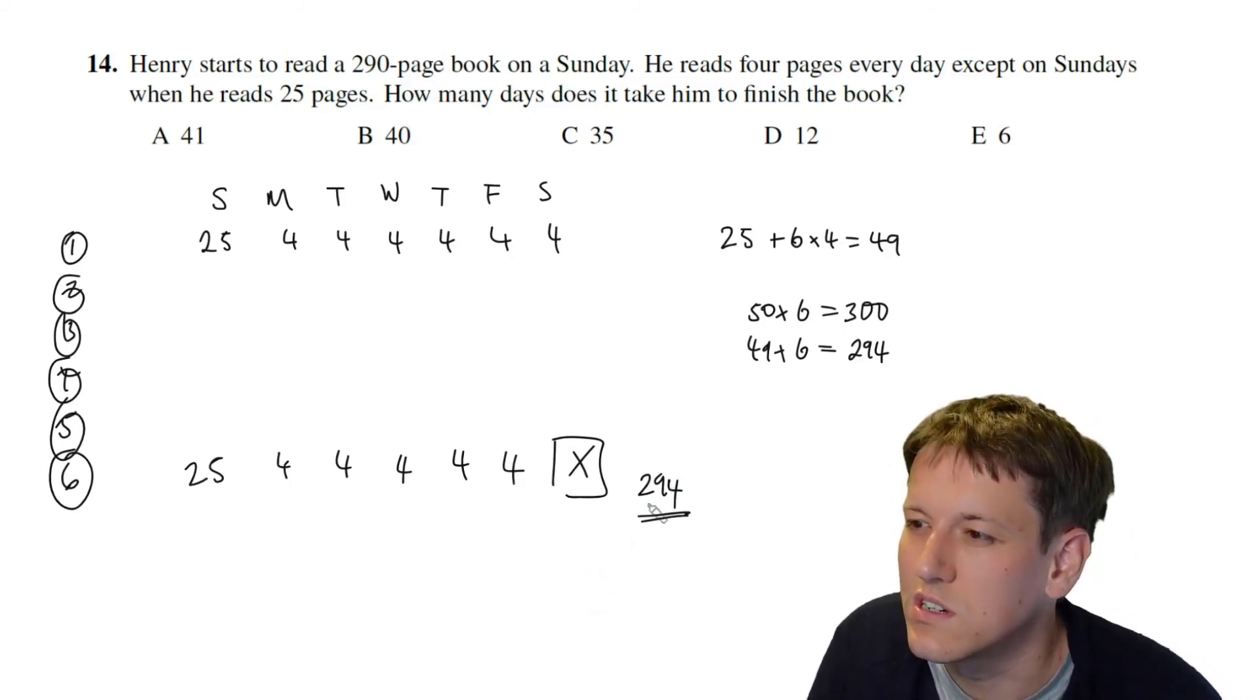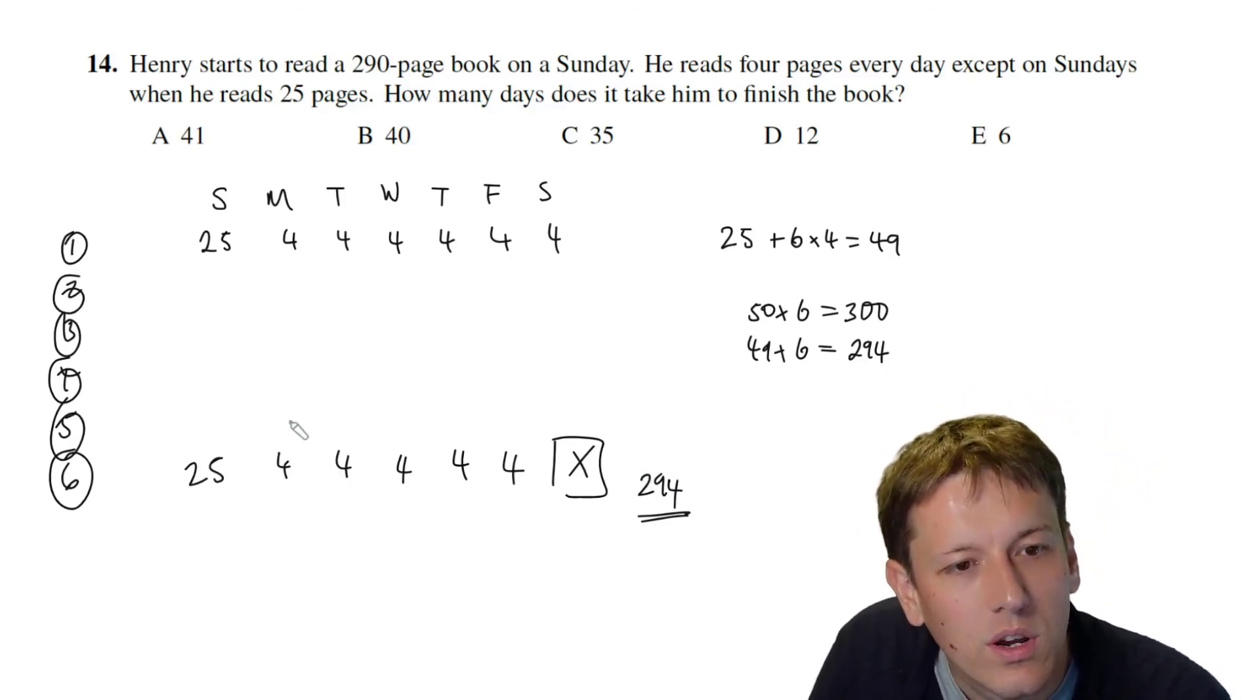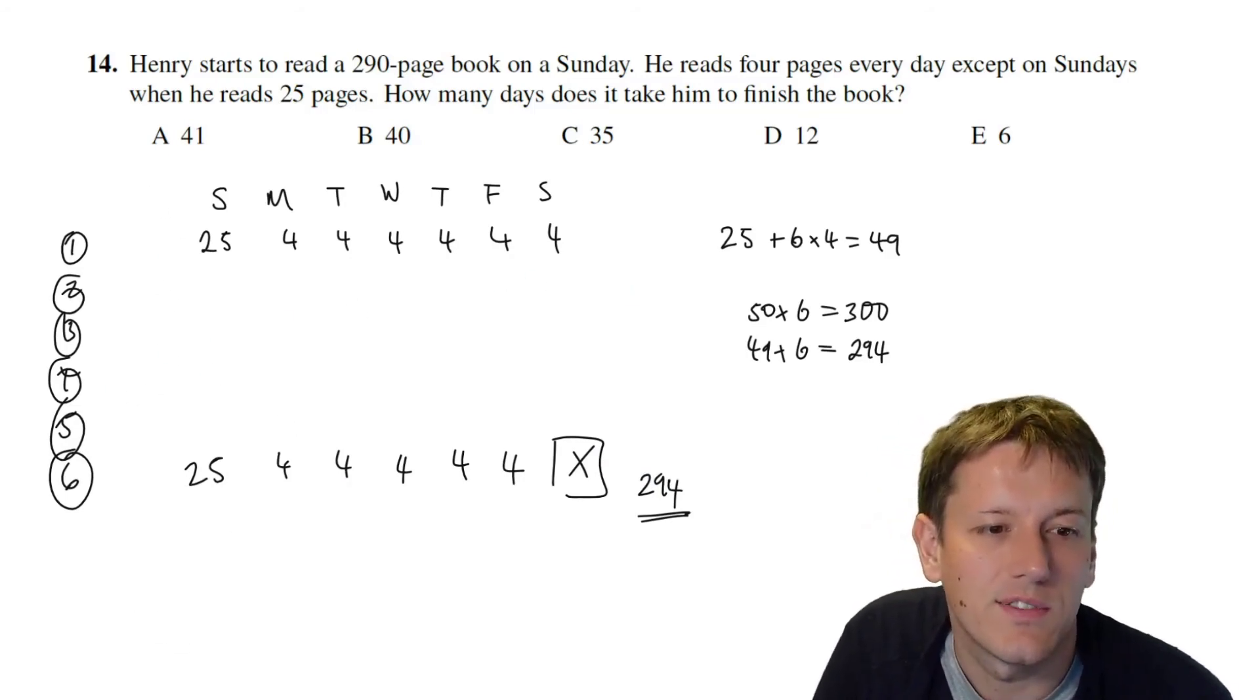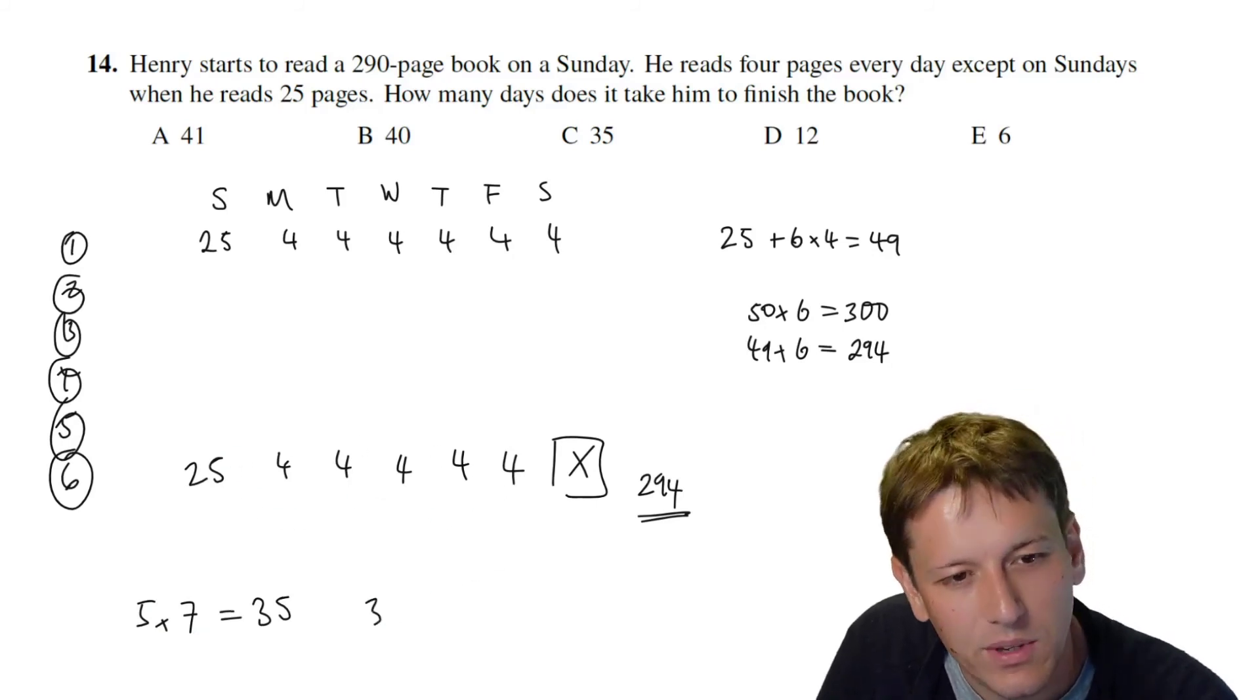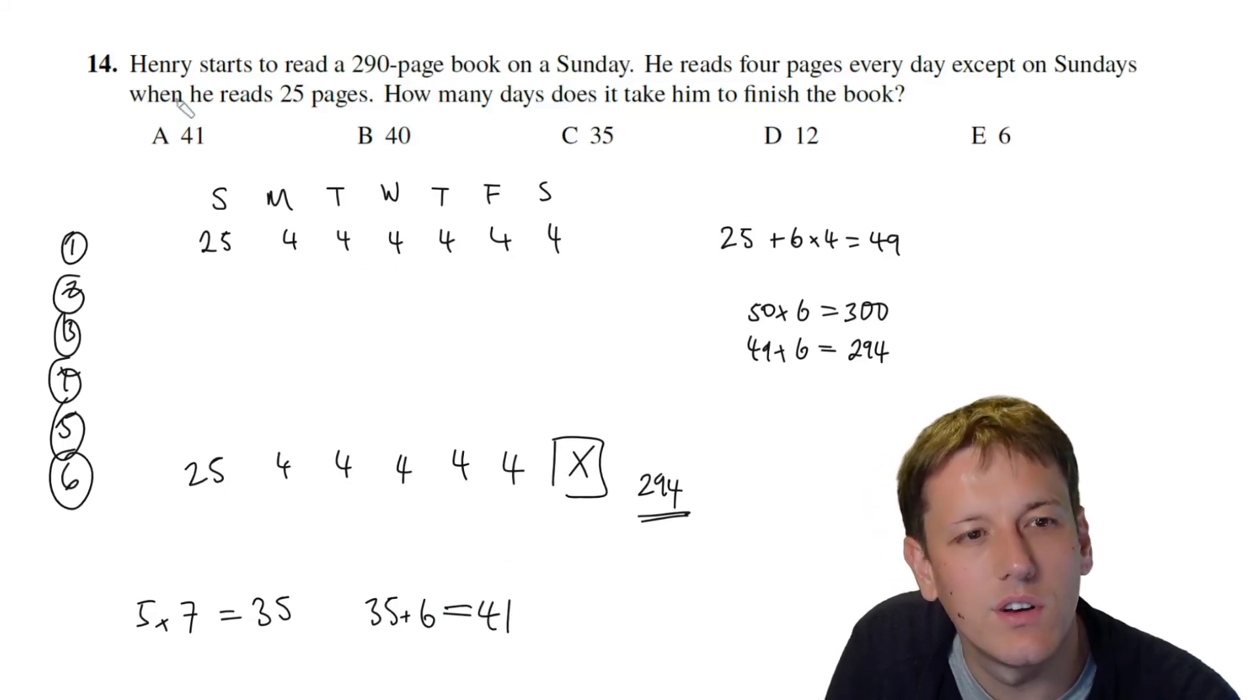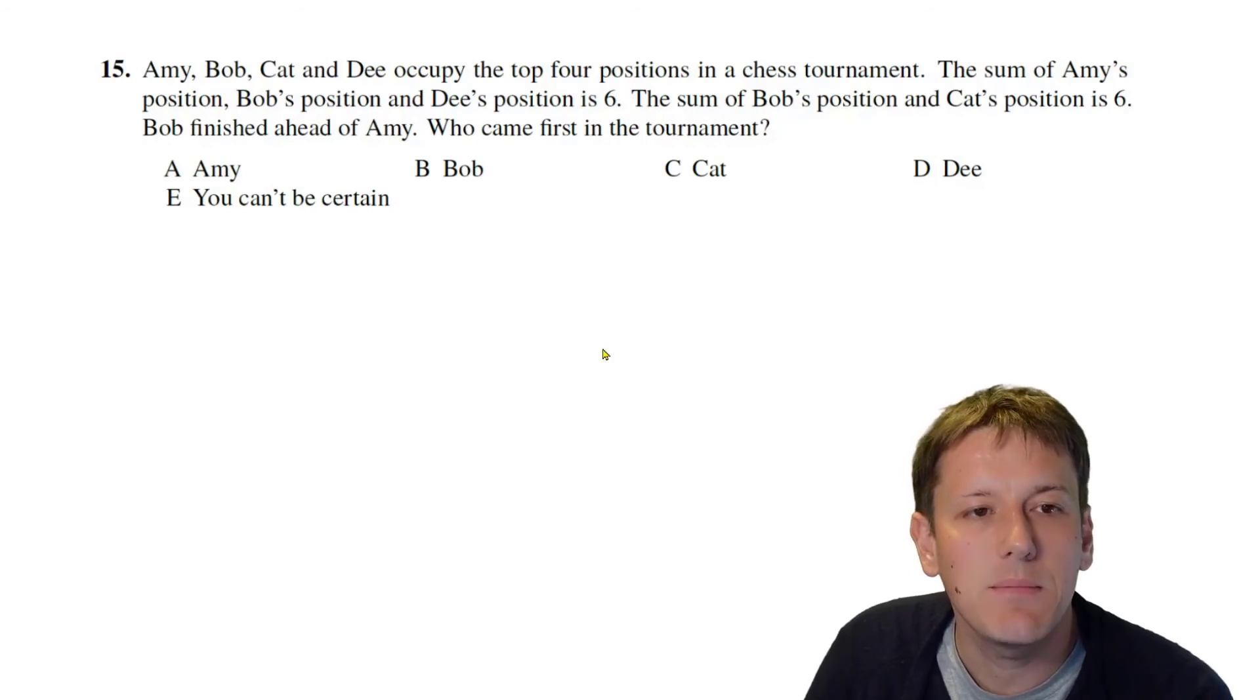So how many days has it taken him to finish the book? Well there's five full weeks so that's 5 times 7 days is 35 and then we've got six more days in the final week, so 35 plus 6 gives us 41 and so the answer here is A.